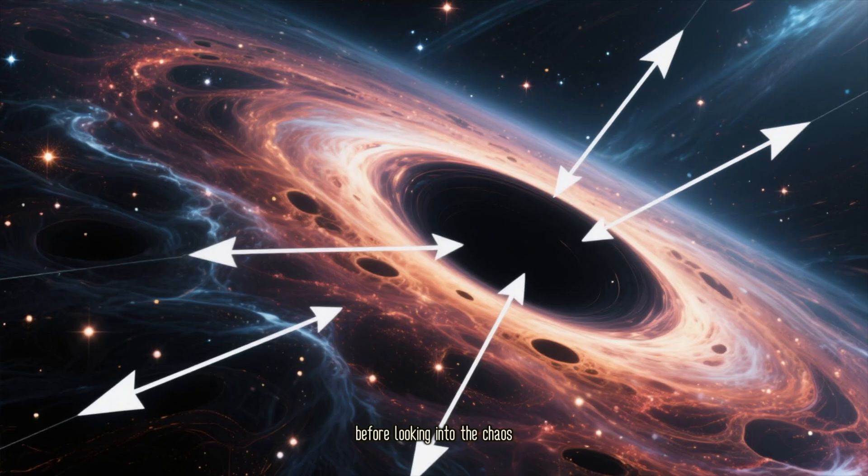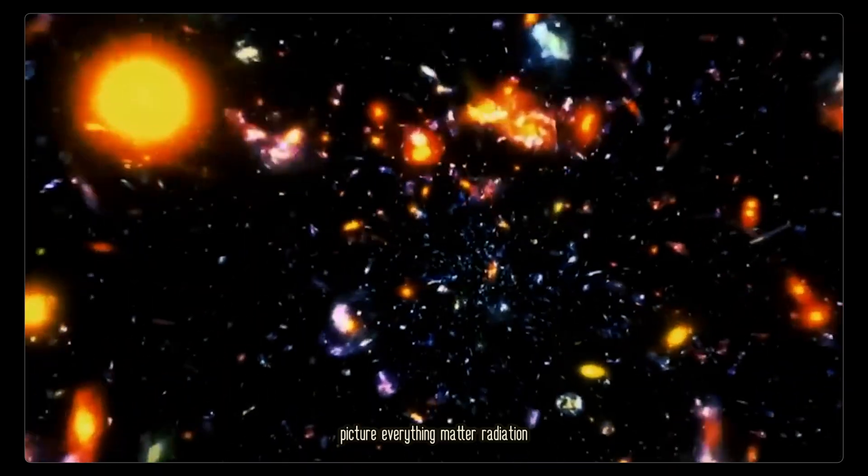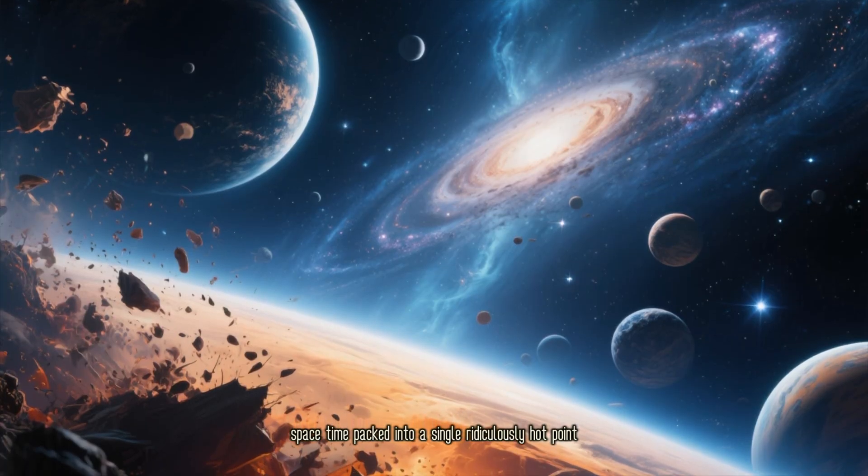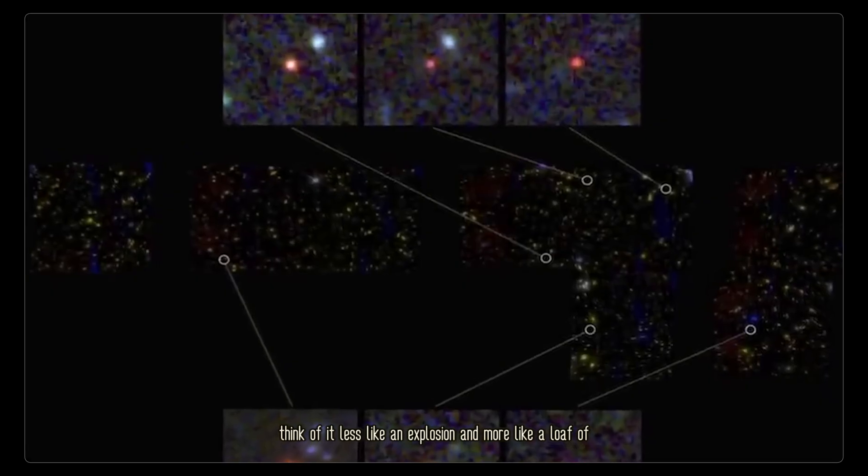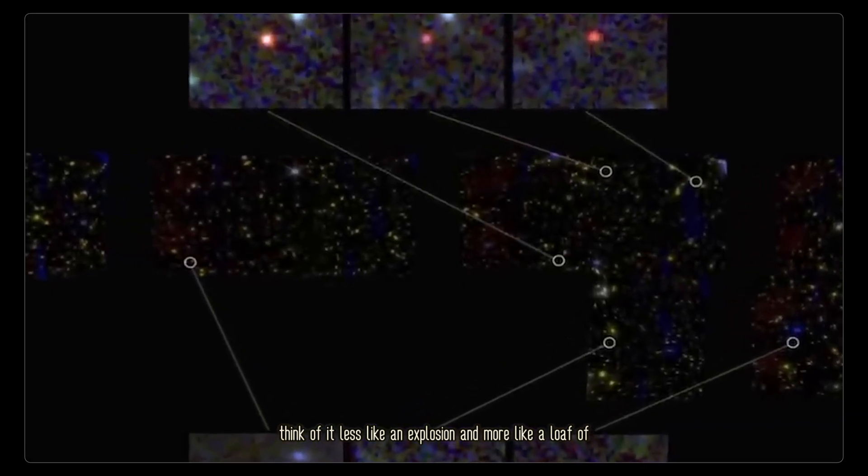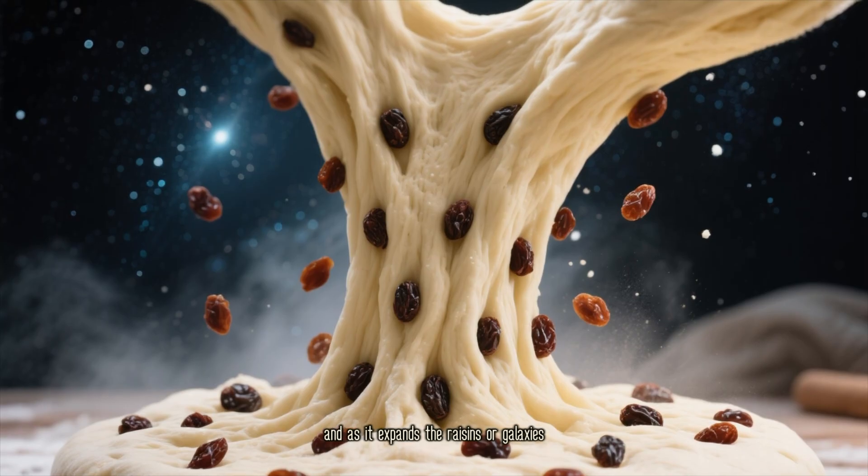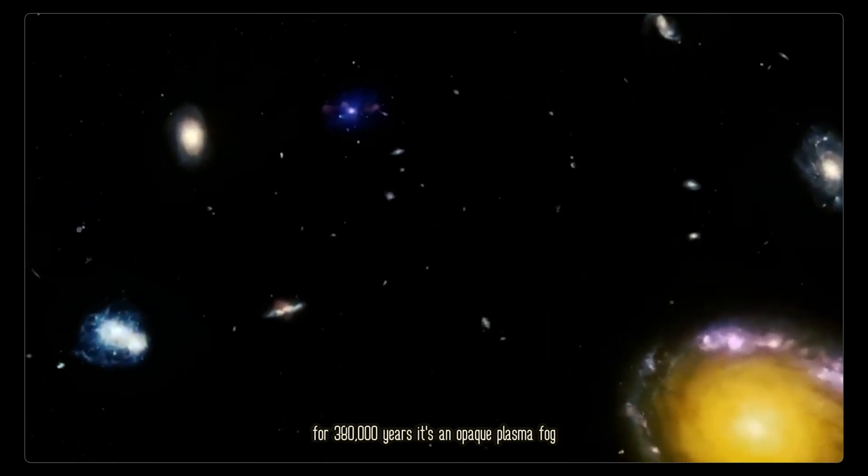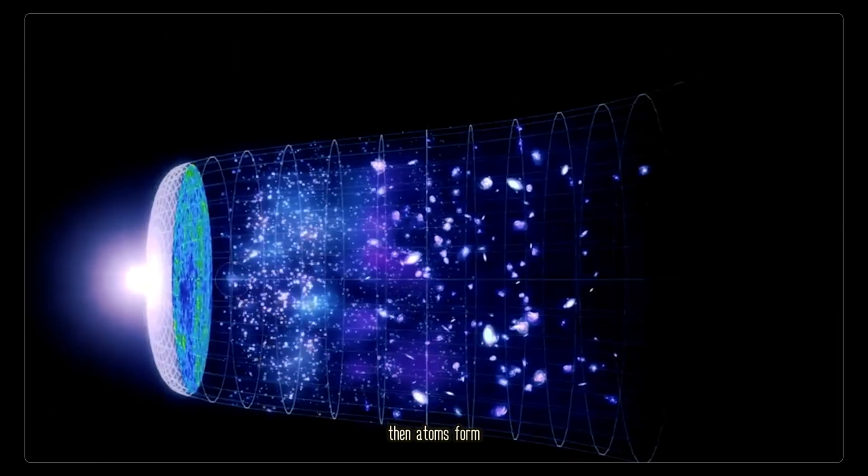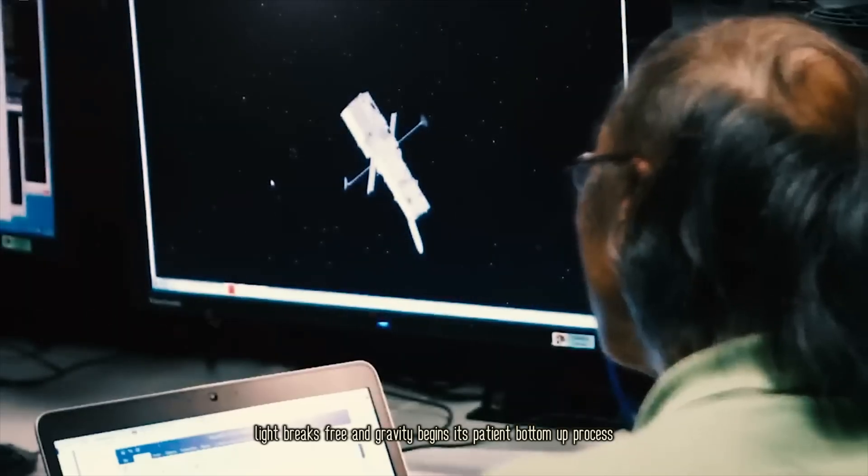Before looking into the chaos, we have to understand the order it threatens. Picture everything—matter, radiation, space, time—packed into a single, ridiculously hot point. Then it expands. Think of it less like an explosion, and more like a loaf of raisin bread rising in an oven. The dough is space itself, and as it expands, the raisins, or galaxies, are all carried away from each other. For 380,000 years, it's an opaque plasma fog. Then atoms form, light breaks free, and gravity begins its patient, bottom-up process.